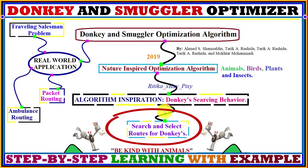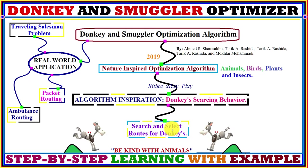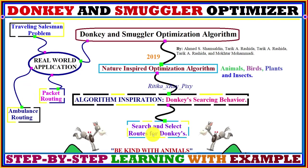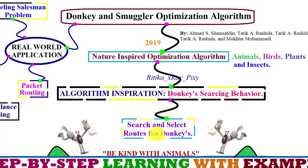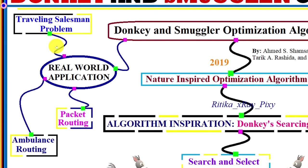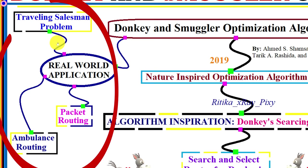The Donkey and Smuggler Optimization Algorithm mimics the transportation behavior of donkeys' movement in real life. This behavior includes route searching and route selection for the donkey's movement by their owners. The author implemented the route search and route selection behavior in this algorithm to find out the optimal solution. It is also tested on different benchmark test functions and implemented to solve real-world optimization problems such as the Traveling Salesman Problem, packet routing, and ambulance routing.